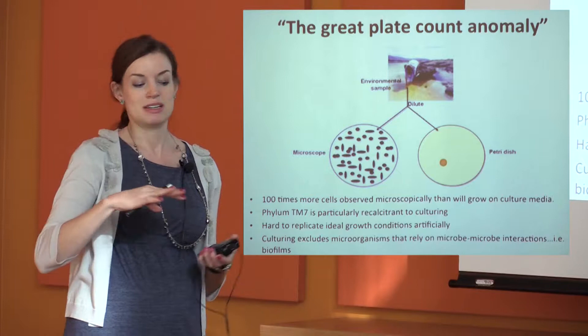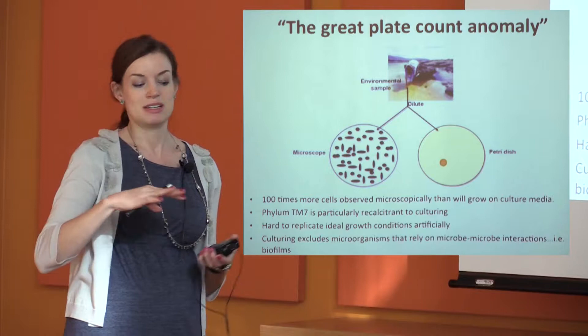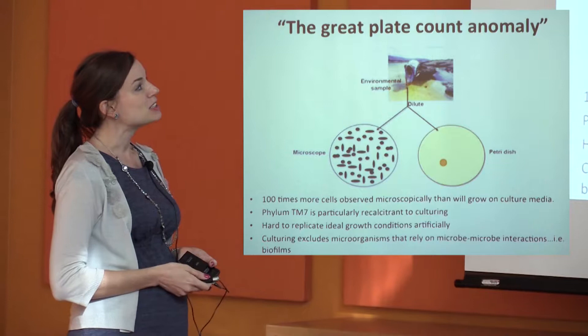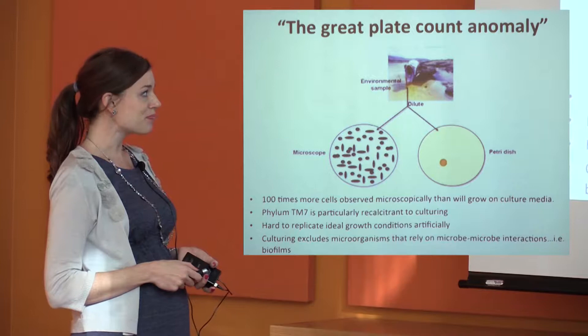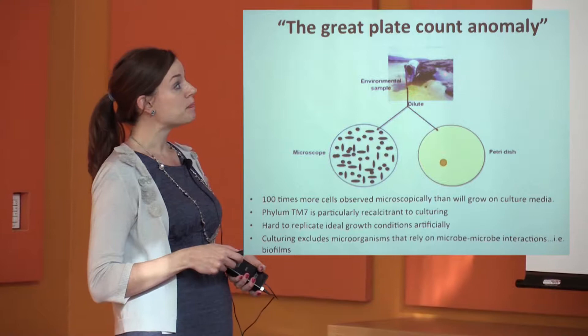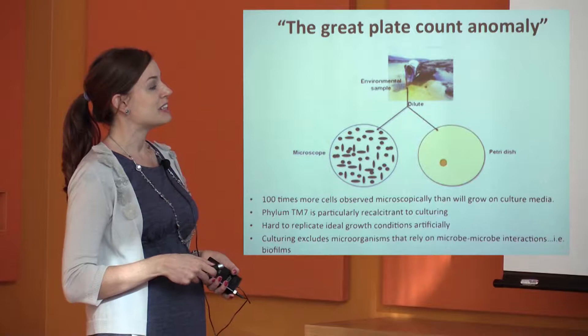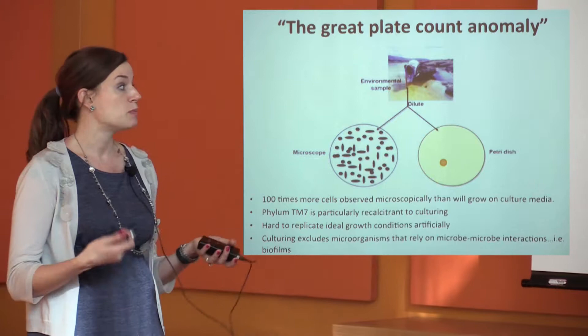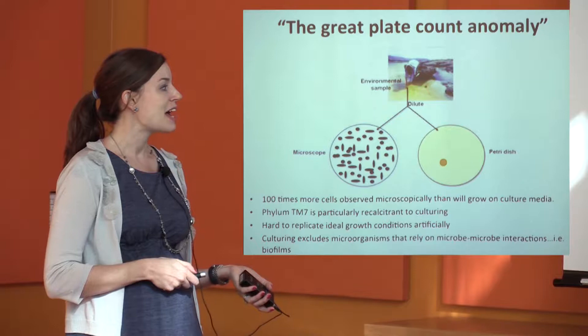Moving on — that's what a microbiome is. I want to talk about how we analyze and characterize microbiomes. It all started with something called the great plate count anomaly. A group of researchers noticed that they could take an environmental sample and look at it under the microscope, then culture it and see what could grow on a petri dish. They observed that under the microscope, it looked like there were a hundred times more cells than would grow on the culture media, suggesting that not all bacteria were able to be cultured.